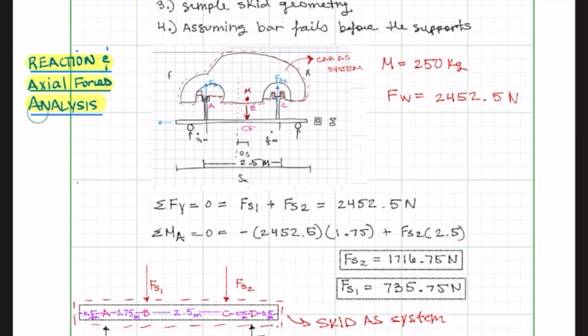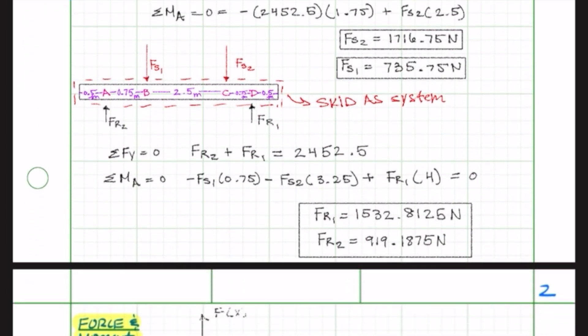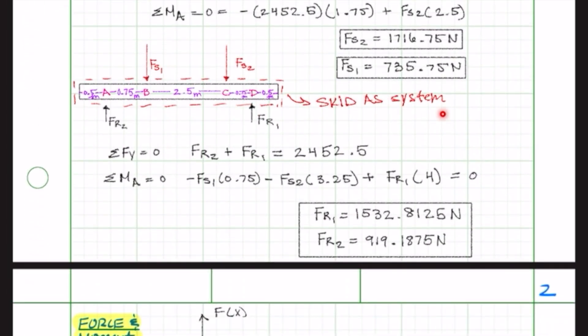We then calculated support forces FS1 and FS2 using the car as a system, where the full weight of the car is 250 kg, using sum of forces in Y and taking the moment at point A. After the support forces were calculated, we switched the system to be the skid to calculate the transfer conveyor points, which we treated as reaction forces, where we did the sum of forces in Y and moment at A.